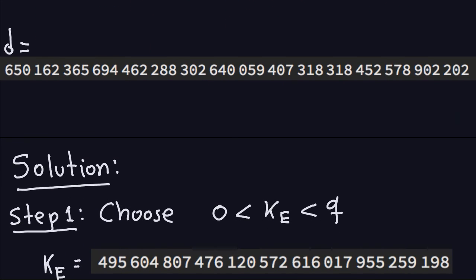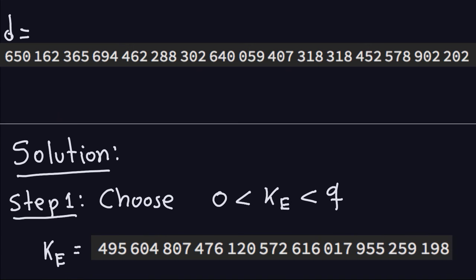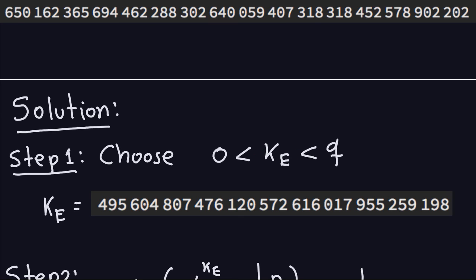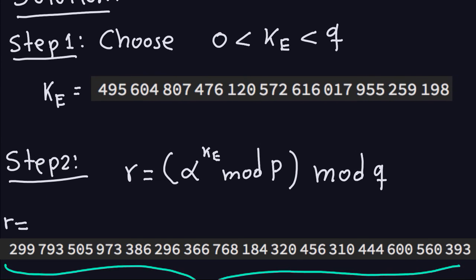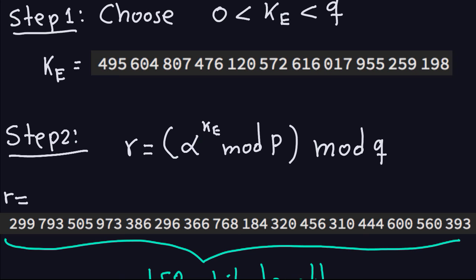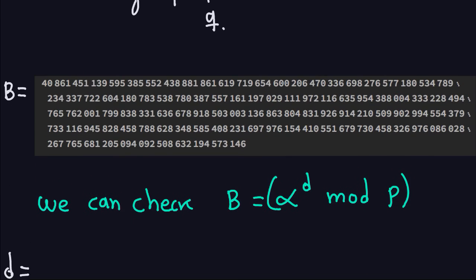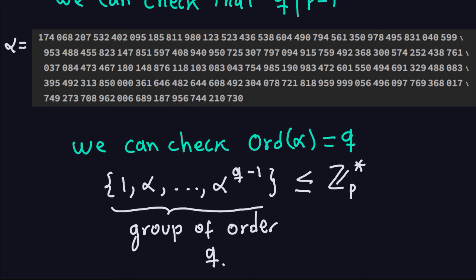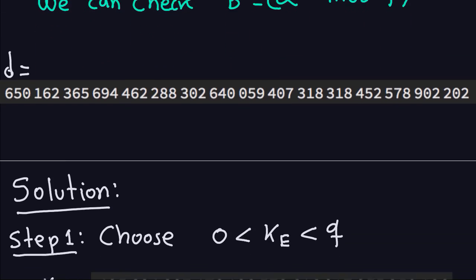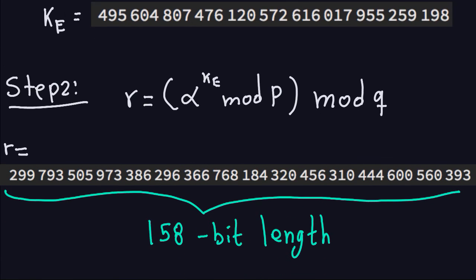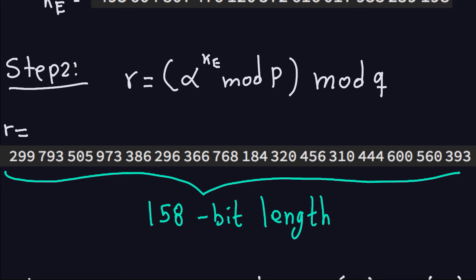Now let's sign the message 612. Step one: choose the ephemeral key between 0 and Q — Q here is a large number, so the ephemeral key chosen is also a large number in that range. Step two: compute R as Alpha to the ephemeral key modulo P, then modulo Q. Alpha is the huge number we saw, and doing this modular exponentiation in Java gives a result that is about 158 bits long.